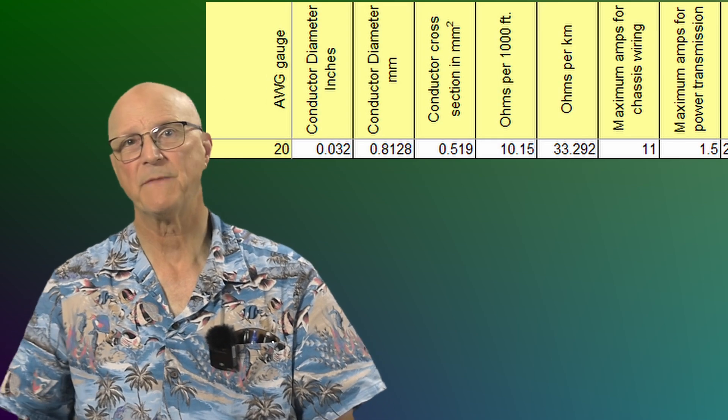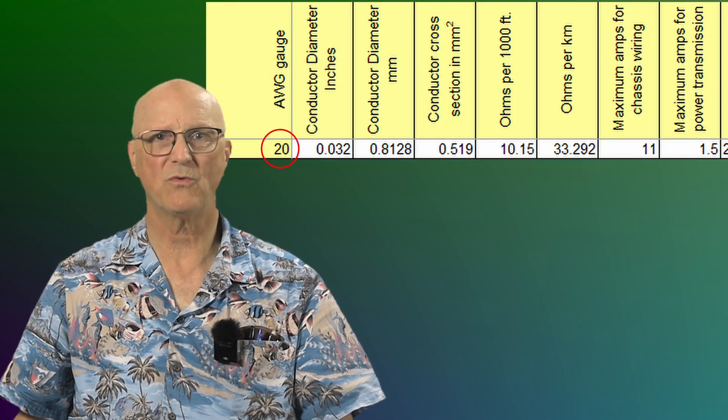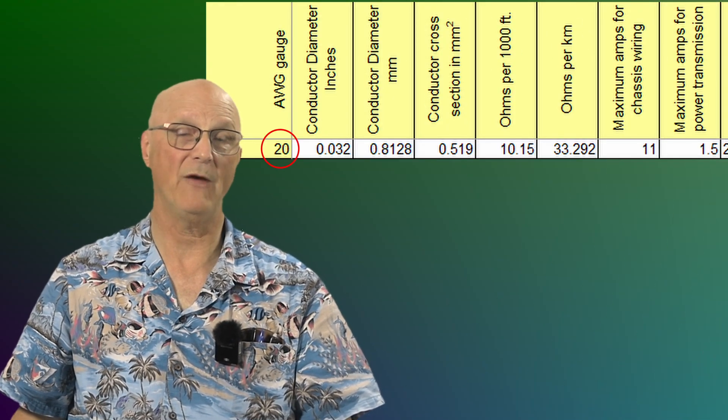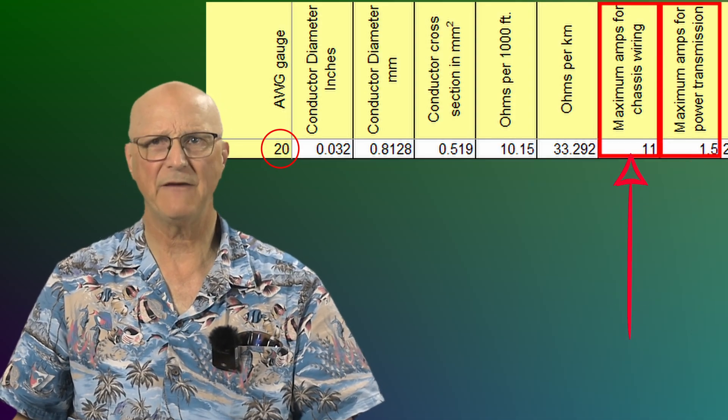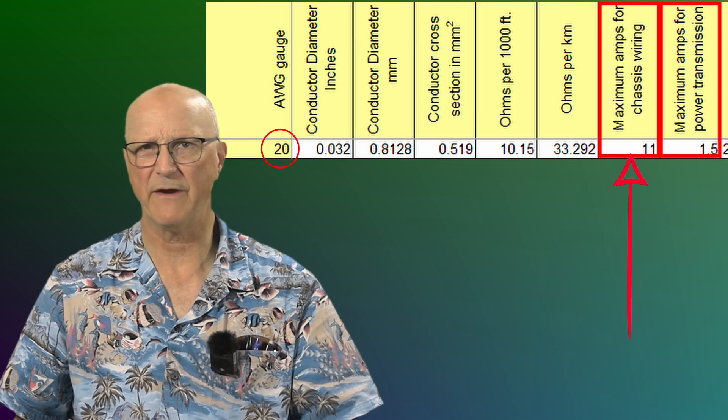Well, the wire table that I have specifies a very different current rating for chassis wiring as opposed to transmission. I mean, take a look here. Here is a 20 gauge wire. It is rated at 1.5 amps for power transmission and 11 amps for chassis wiring.